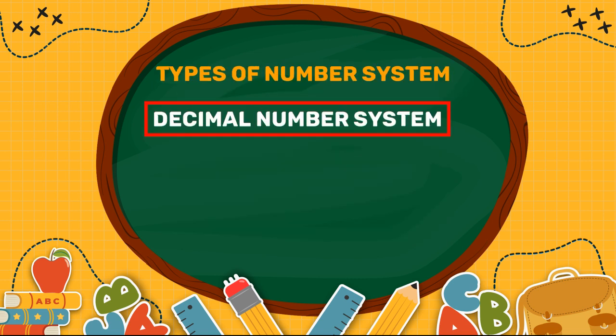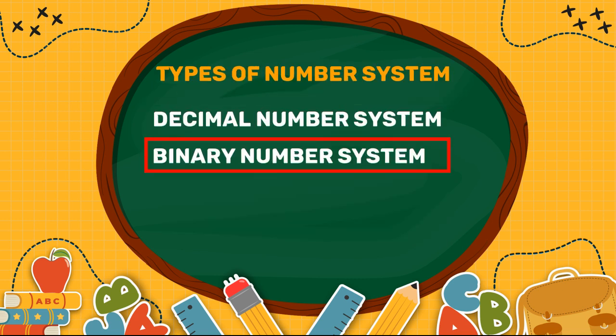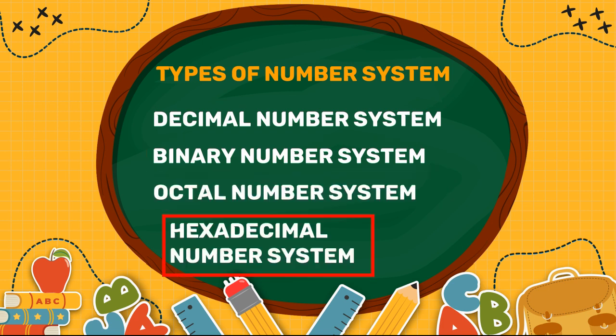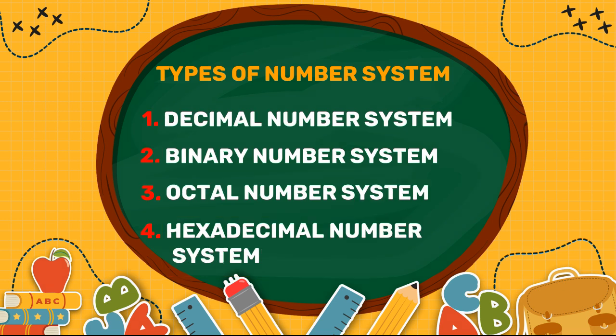The four number systems introduced are: Decimal number system, Binary number system, Octal number system, and Hexadecimal number system.